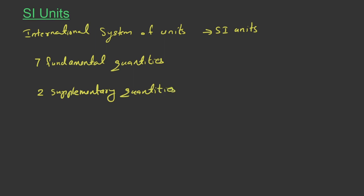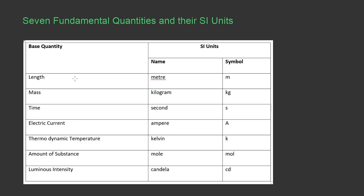We are going to see the seven fundamental quantities and two supplementary quantities and their SI units. The seven fundamental or base quantities are: length, mass, time, electric current, thermodynamic temperature, amount of substance, and luminous intensity. Their corresponding SI units are: meter, kilogram, second, ampere, kelvin, mole, and candela, represented by their respective symbols.